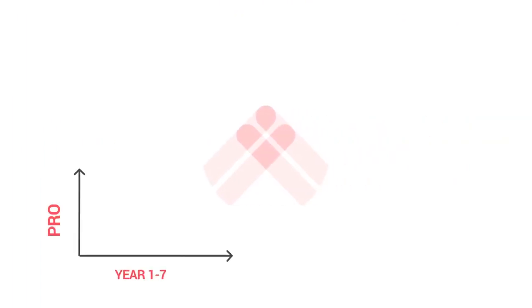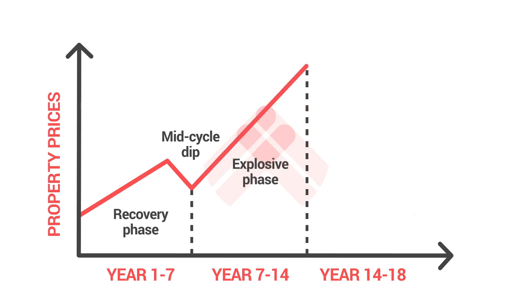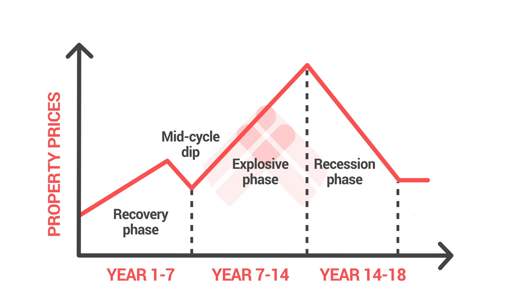So what are the stages of the cycle? Reasonably straightforward. In the beginning, normally over the first seven years, you have the recovery phase — a period of slow, moderate growth after a crash. Towards the end of this recovery, you have the mid-cycle dip. Notice the word dip — this isn't a crash and it doesn't last very long. But it occurs nearly every single time, and its consequences lead into the explosive phase, where you can see huge growth. After that comes the correction or recession phase, where property prices tumble and stagnate for normally around four years. That's the 18-year property cycle.